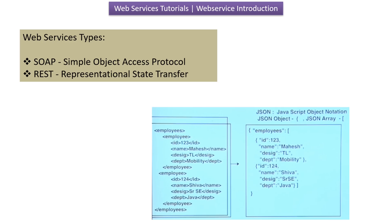REST is a set of rules that allows different applications to communicate using simple HTTP requests. REST often uses JSON, which is a lightweight data format that is easy for humans to read and machines to parse. Here you can see the same employee information written in JSON format. A message in REST is like a simple note passed between applications — easy to read and understand.